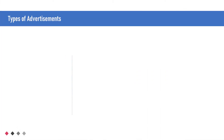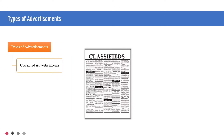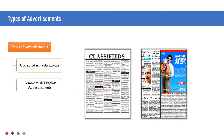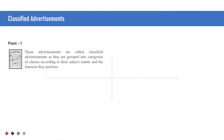There are two types of advertisements: Number 1 is Classified Advertisements, and Number 2 is Commercial or Display Advertisements. Classified advertisements are called so because they are grouped into categories or classes according to their subject matter and the function they perform.